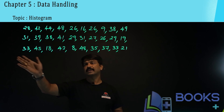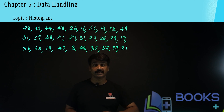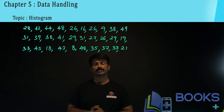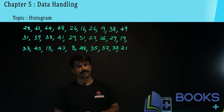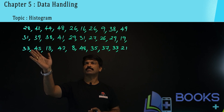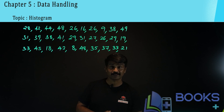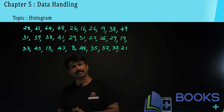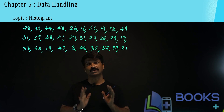These are the marks obtained by 30 students in a class for a mathematics examination. The marks were out of 50. We have to make a histogram. To make a histogram, we have to make some class intervals.